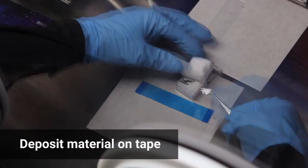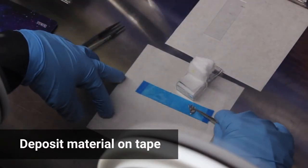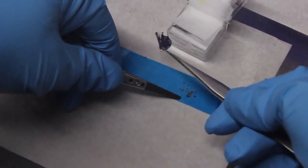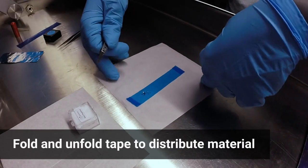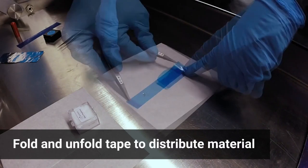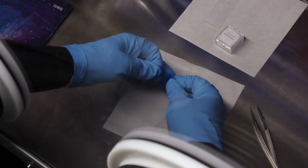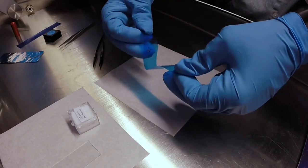Using tweezers, deposit the desired material about one quarter of the way down the length of the tape by repeatedly pressing it onto the tape. Further distribute the material by folding the tape in half, sticking it to itself, and pulling it apart so that the material covers an area of at least 1 square cm.